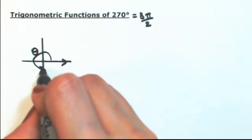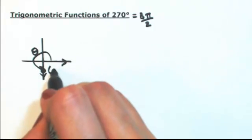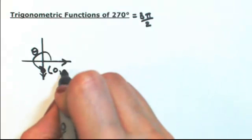Okay, let me grab a point on the terminal side of theta. X is going to be zero. Y is going to be something negative, let me just choose negative 1.